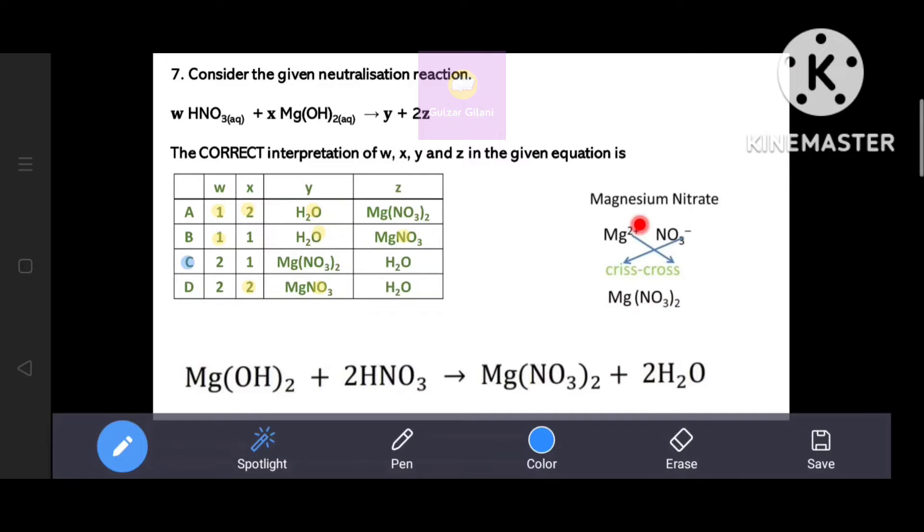To make magnesium nitrate formula, magnesium belongs to group 2A with +2 charge. Nitrate ion has -1 charge. Criss cross means 2 here. Option A or C correctly represent magnesium nitrate formula.